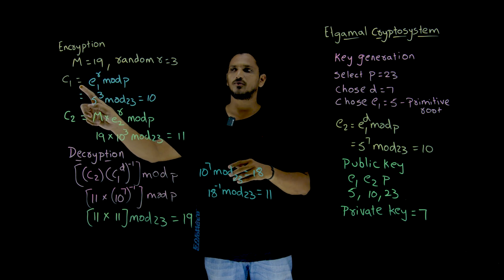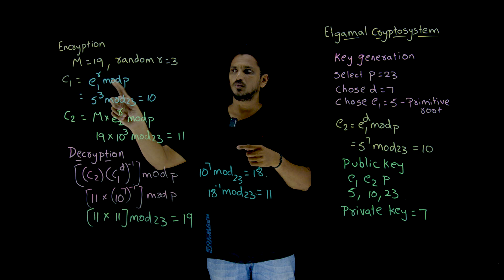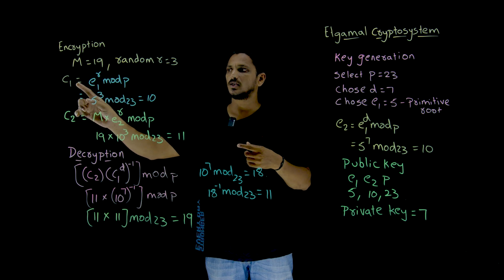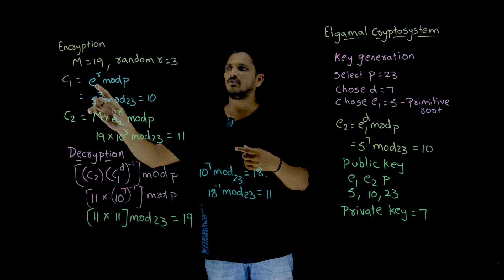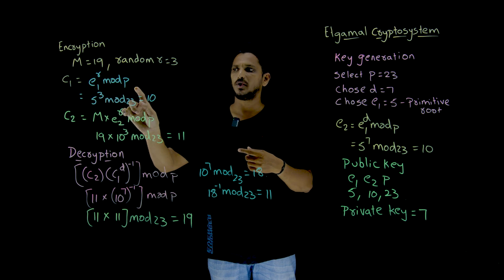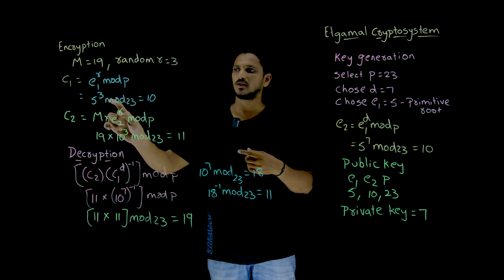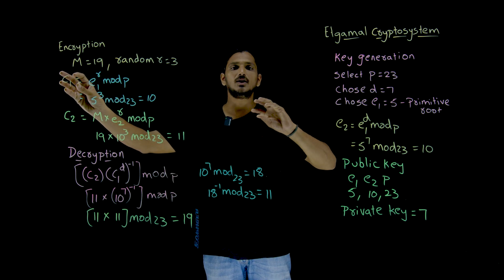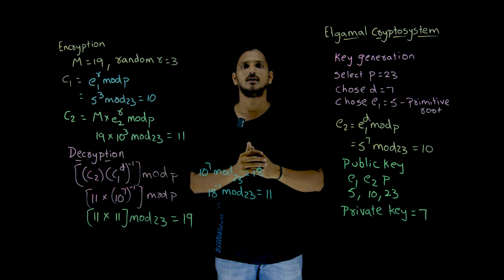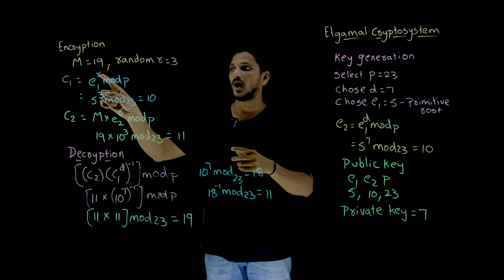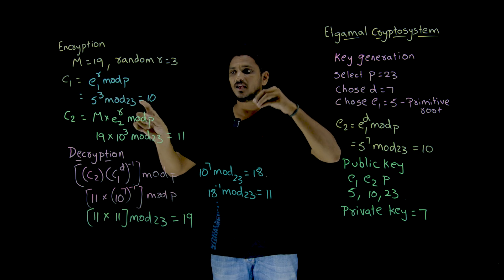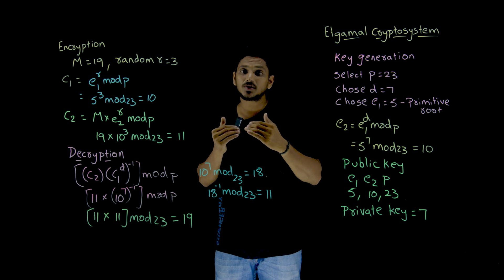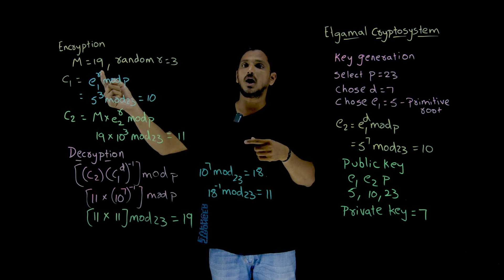So randomly generate 3 value. So C1 equal to this R value using E1, what we are going to do here is C1 equal to E1 power R mod P. E1 means 5. 5 power 3 mod 23 which is 10. So this C1 is sent to the decryption because the R value is indirectly hidden in this 10 value.